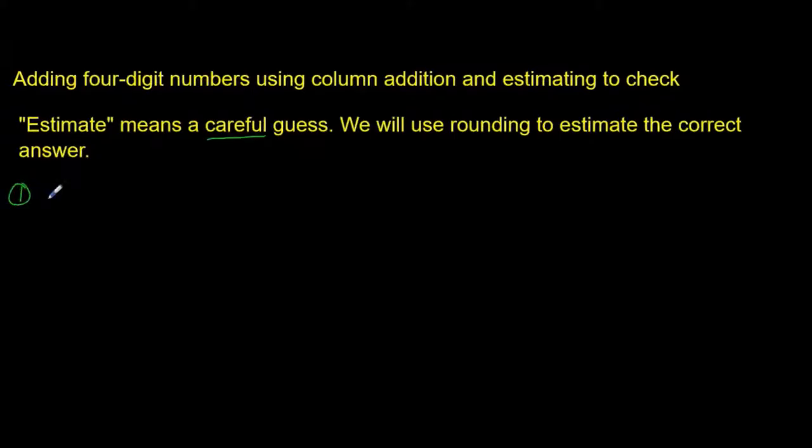Let's get started. Number one. Let's suppose I have this four-digit number, 2,693, and I want to add it to this four-digit number, 4,192.